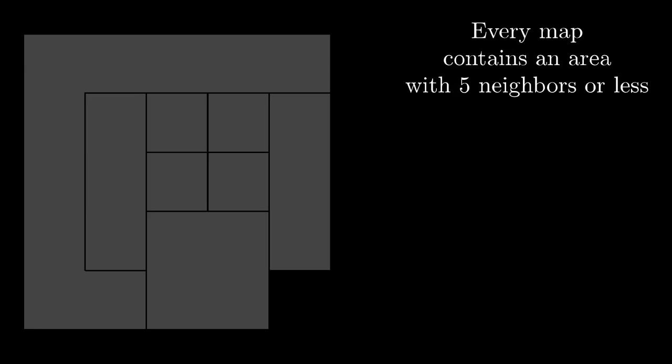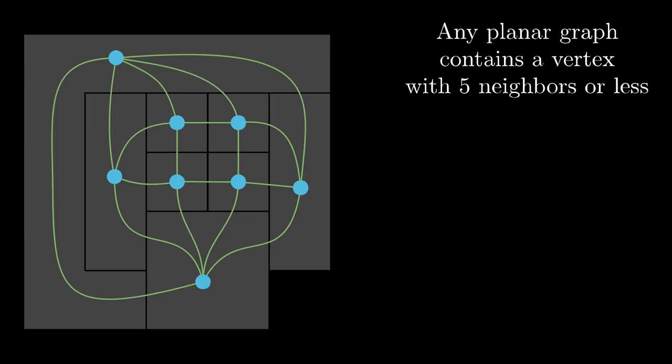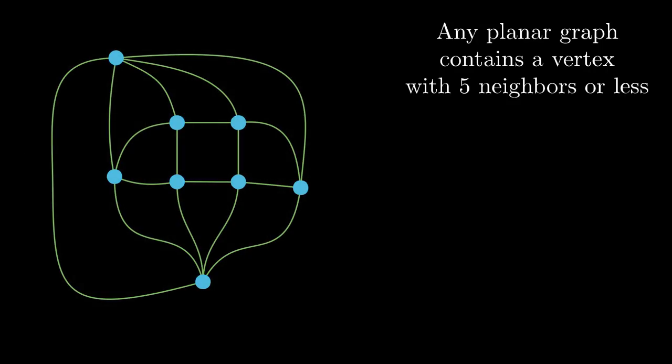To do that we need graph theoretical perspective. Every area can be represented by a dot, the dots are called vertices. And two vertices are joined by an edge if the corresponding areas share some part of their border. This can be done in such a way that there are no intersecting edges. So the lemma is now translated to the statement that every planar graph, that's a graph in plane without edge intersections, contains a vertex with no more than 5 neighbors. We will prove the new version of the lemma and we don't need the original map anymore. We can see that the edges of the graph define again boundaries of some areas though these are completely different from the original ones. These new areas are called faces.